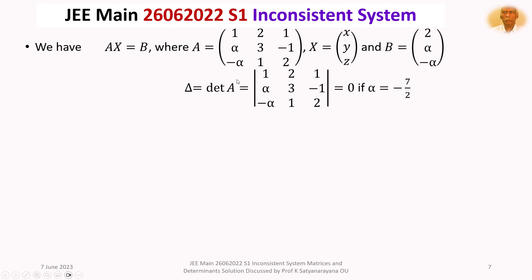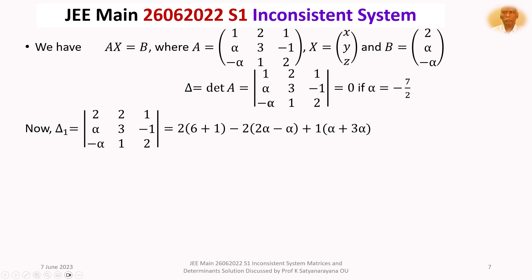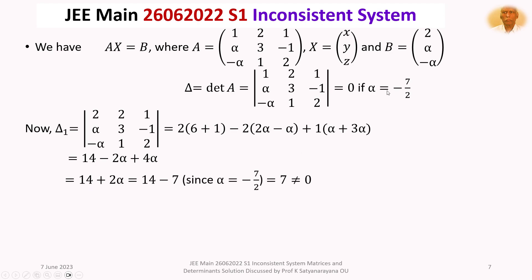Delta equals 0 when alpha equals minus 7 by 2. Now take delta and replace the first column with the column vector B, that is 2, alpha, minus alpha, to get delta 1. Expanding delta 1 by the first row and simplifying gives 14 minus 2 alpha plus 4 alpha, which equals 14 plus 2 alpha. With alpha equal to minus 7 by 2, we get 2 alpha equal to minus 7, so delta 1 equals 14 minus 7 equals 7, which is not equal to 0. Therefore at least one of delta 1, delta 2, delta 3 is non-zero for alpha equal to minus 7 by 2.